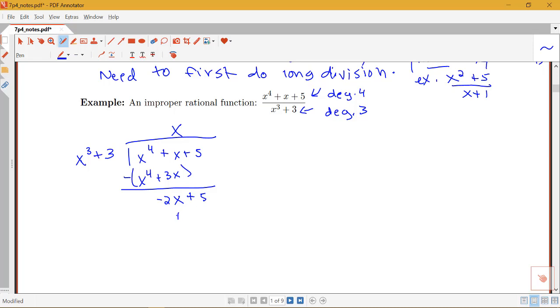So I know that I'm done because this is lower degree than x cubed plus 3. So I can write this fraction here as x plus this negative 2x plus 5 over x cubed plus 3. And now this second term here is proper and I could use a procedure for partial fraction decomposition on this second term.